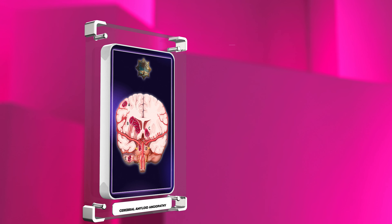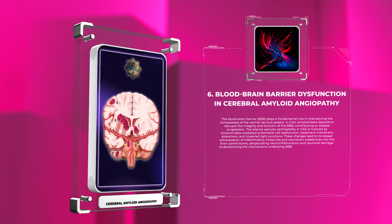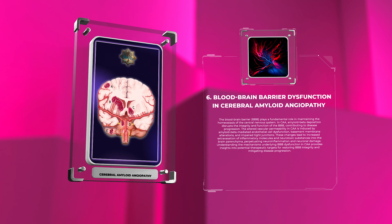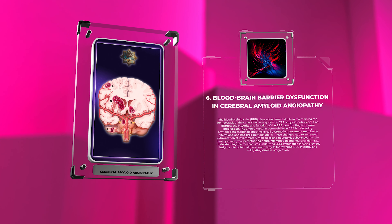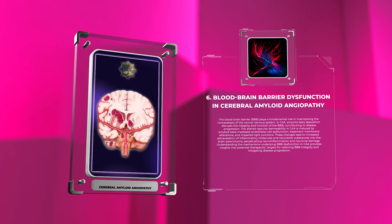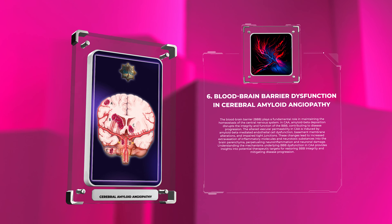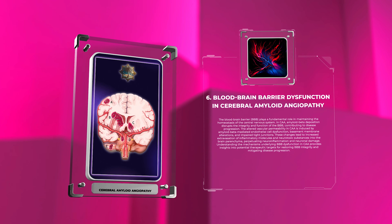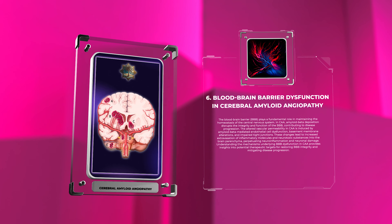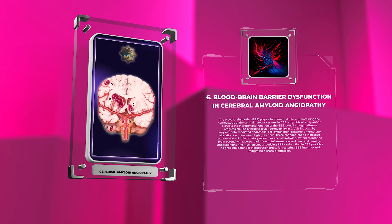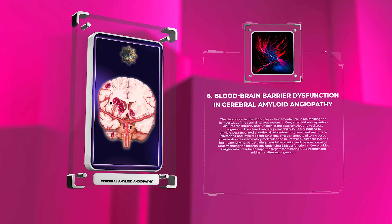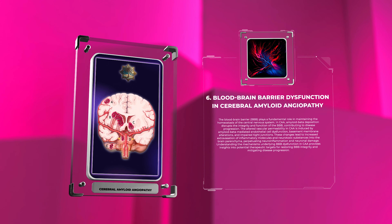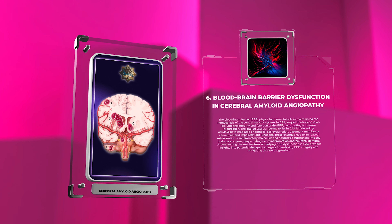The blood-brain barrier, BBB, plays a fundamental role in maintaining the homeostasis of the central nervous system. In CAA, amyloid beta deposition disrupts the integrity and function of the BBB, contributing to disease progression. The altered vascular permeability is induced by amyloid beta-mediated endothelial cell dysfunction, basement membrane alterations, and impaired tight junctions. These changes lead to increased extravasation of inflammatory molecules and neurotoxic substances into the brain parenchyma, perpetuating neuroinflammation and neuronal damage.